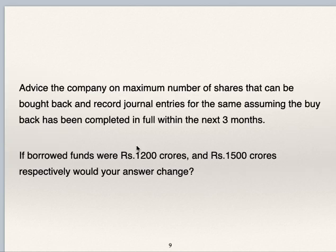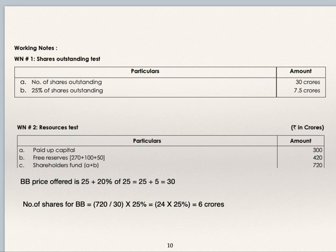If the borrowed funds, instead of 800, are 1200 and 1500 crores, then would your answer change? We will prepare working notes. First working note is finding the shares outstanding test. Number of shares outstanding is 30 crores. 25% of that is 7.5 crores. So as per the shares outstanding test, number of shares to be bought back is 7.5 crores.